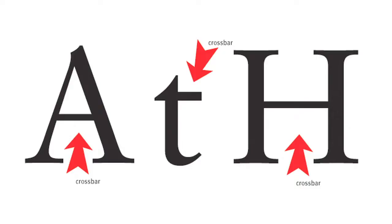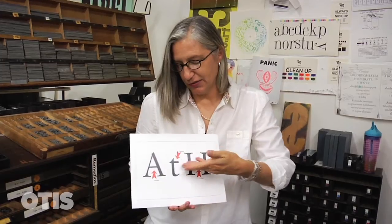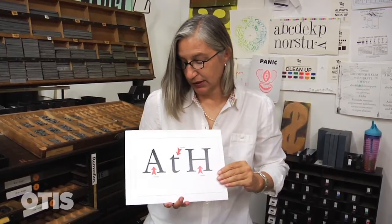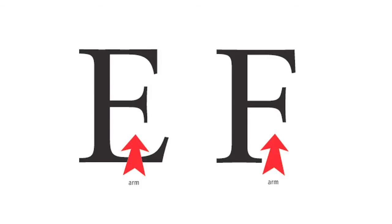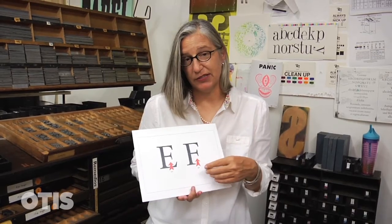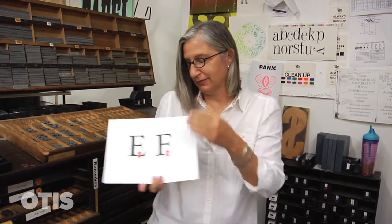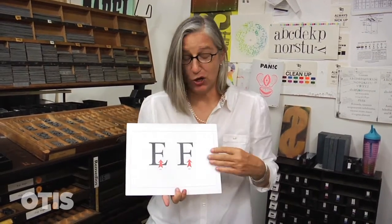A crossbar is a horizontal stroke — it generally attaches to two sides. It is what it says: it's a crossbar. When it doesn't attach to two sides, it's called an arm. So again, if you imagine little bodies, those would be arms.